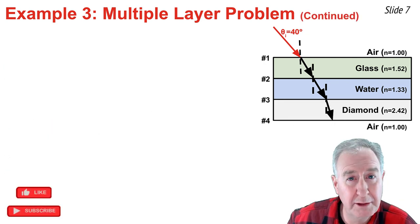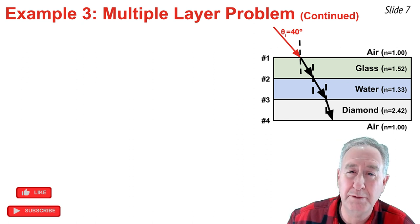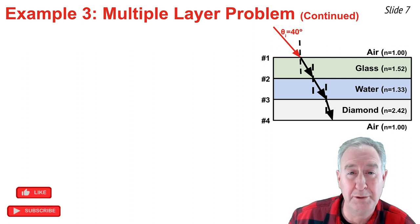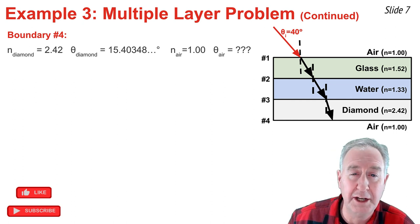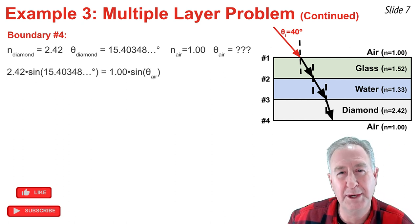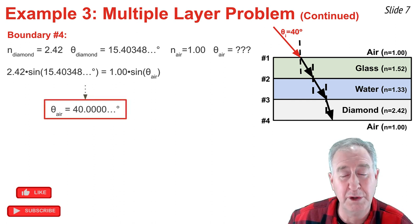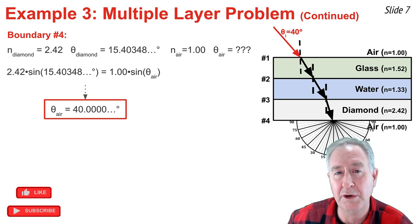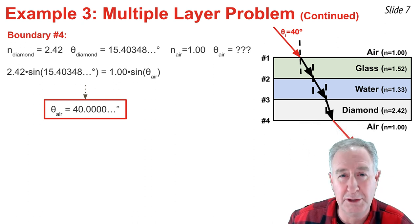At boundary four, the angle of incidence in diamond equals the angle of refraction in diamond at boundary three: 15.40348 degrees. I know the n of diamond and the n of air. Substituting these three knowns into Snell's Law, evaluating the left side, dividing by 1.00, and taking the inverse sine, I get exactly 40 degrees. I lay a protractor down, draw the refracted ray 40 degrees from the normal line, and finish the diagram.